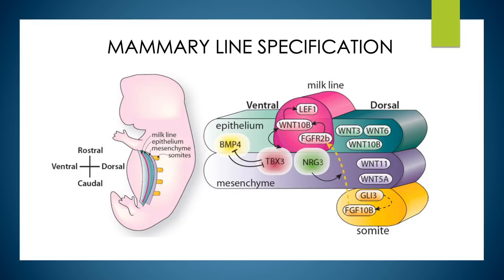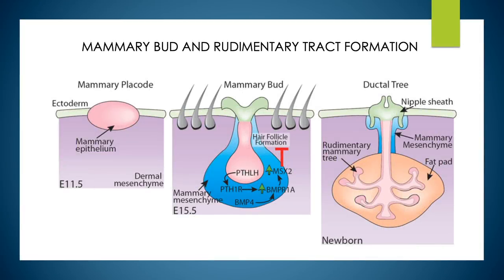The milk line is apparent between the forelimbs and hindlimbs, demarcating the rostral and caudal extension of the line. Specification requires early WNT signaling in the epithelium and flanking mesenchyme. TBX-3 expression controls subsequent WNT signaling required for mammary placode development, and is regulated by FGF-10 from underlying somites, WNT signaling in the flank, and BMP-4 signaling at the ventral border. During the next stage, mammary placodes expand to form a round ball of cells that descends into the underlying mesenchyme, and stalks are formed connecting the mammary bud to the epidermis.